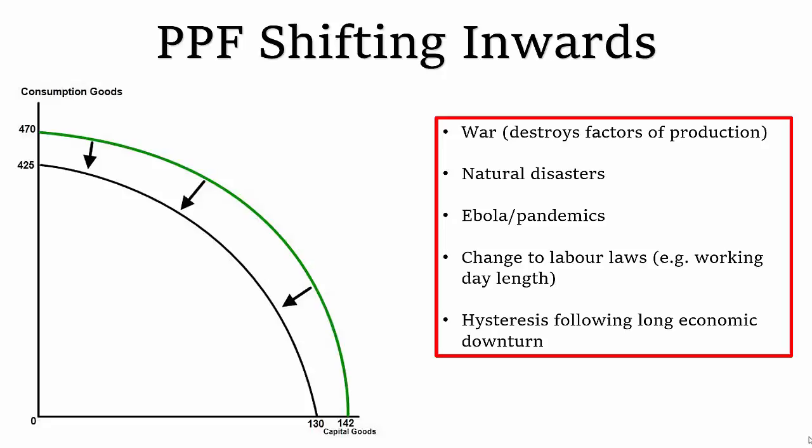And you can also have changes to labour laws. For example, if the government said that the working week should only be 20 hours and not 35, 36 hours, then you've reduced the total amount of productive potential that that economy has by saying that people can't work over 20 hours. And let's say that rule was a rigid rule where nobody was allowed to even do overtime. So that would be an instance where the PPF would shift inwards as well. And also something called hysteresis, which is when people are out of work for a long period of time, they start to lose the skills they've built up. That would, if it was done on a large enough scale, following a very large economic downturn, something like the Great Depression, for example, would then cause the PPF to shift inwards if people have lost their skills and don't have that human capital anymore.